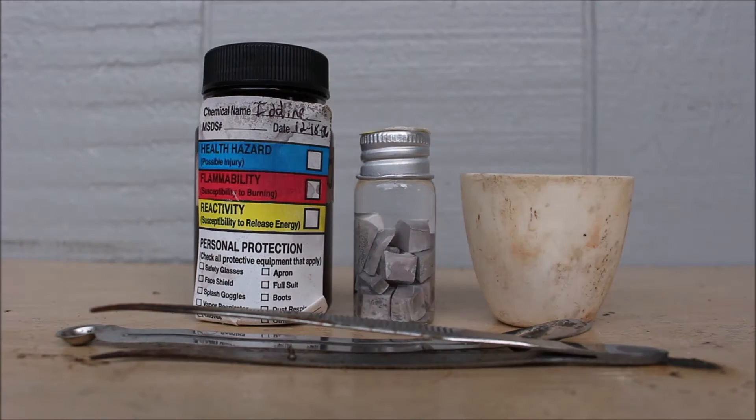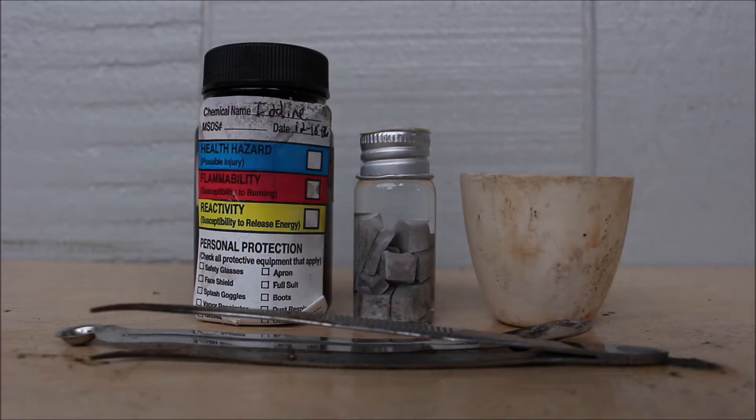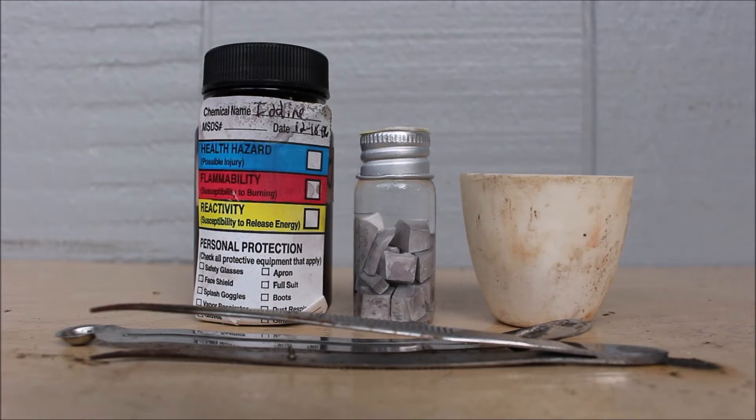The reaction we're going to do today is to observe a reaction between sodium metal and iodine. Sodium metal is a soft, silvery, alkali metal that's very reactive, and iodine is a halogen that's black or purple and sublimates at room temperature. They're both very reactive.